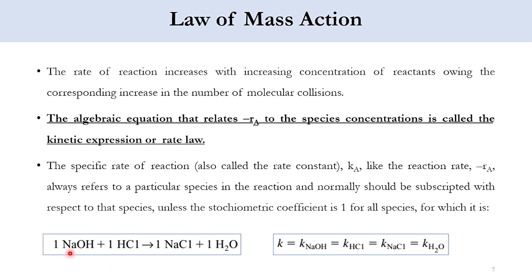For example: 1 mole of NaOH + 1 mole of HCl produces 1 mole of NaCl + 1 mole of H₂O. All species share the same stoichiometric coefficient of 1, so instead of writing K_NaOH, K_HCl, etc., we simply write K. The rate constant should normally be subscripted to a particular species unless all stoichiometric coefficients are 1, in which case we write −R = K × C_NaOH × C_HCl.